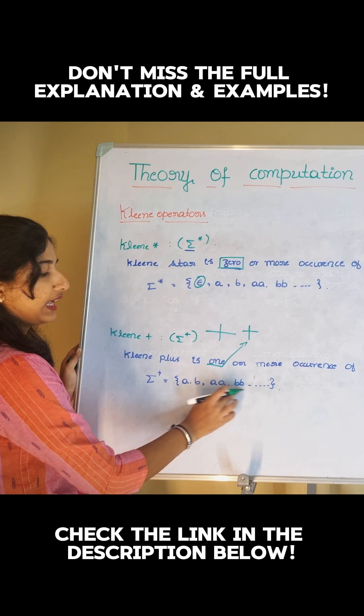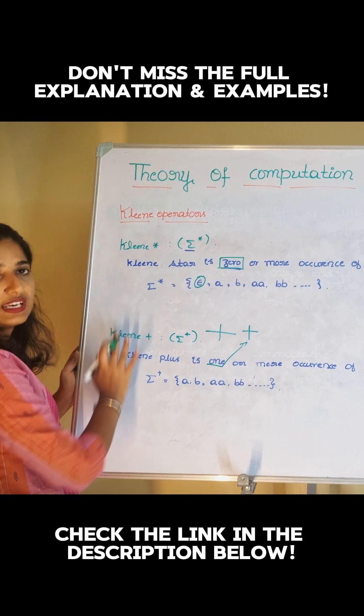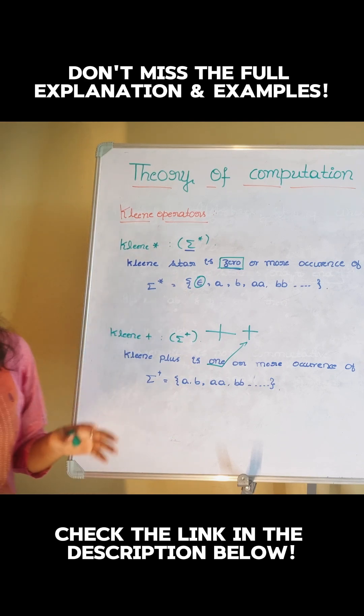So here we have a, b, aa, bb, and so on, but there will be no epsilon in clean plus. This is about clean star and clean plus. And then let's go to the languages.